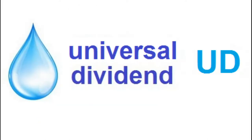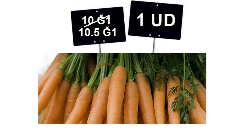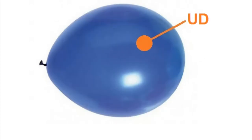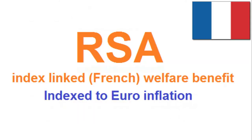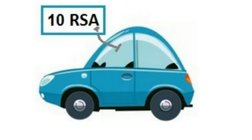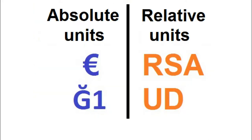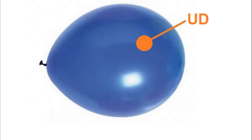But it's different if you count in UD — the Universal Dividend. Right now it's worth about 10 Junés, but it's adjusted twice a year to keep up with the money supply. Let's make an analogy with the RSA, the index-linked French welfare benefit indexed to euro inflation. If prices were displayed in RSA, a price rise of a car would mean the car's value increased, not that the currency lost value. The Juné and the euro are absolute units subject to inflation; in contrast, the UD and the RSA are relative units — there is no inflation for prices expressed in UD.